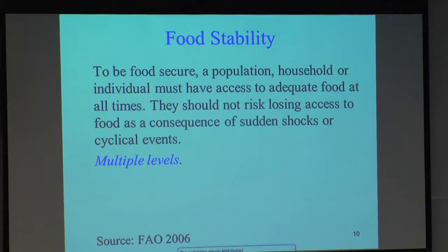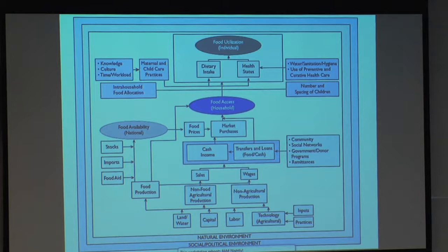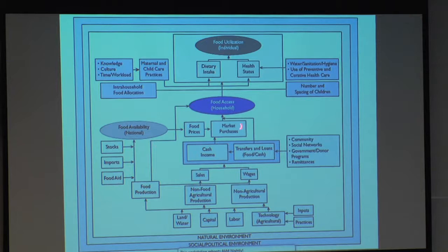This is a more complex framework diagram — it was one of the reading assignments. It talks not just about food availability, access, and utilization, but also all the different determinants of whether those dimensions exist. Notice the flow: food availability feeds into food access. Availability is necessary to have access but not sufficient. And as was mentioned last week, wages determines cash income, which determines market purchases, which determines whether a household has adequate access to food.